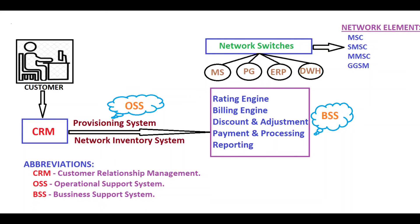Today we are going to learn about telecom building. In telecom building there are three parts: one is CRM - Customer Relationship Management, second one is OSS which is Operational Support System, and third one is BSS which is Business Support System.